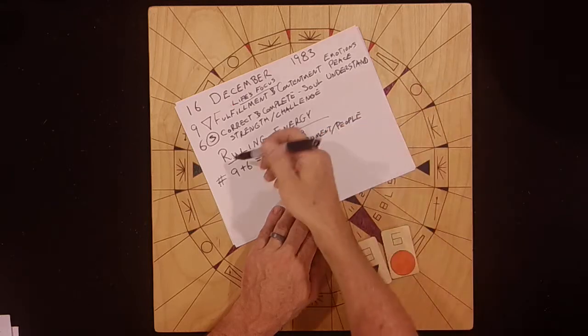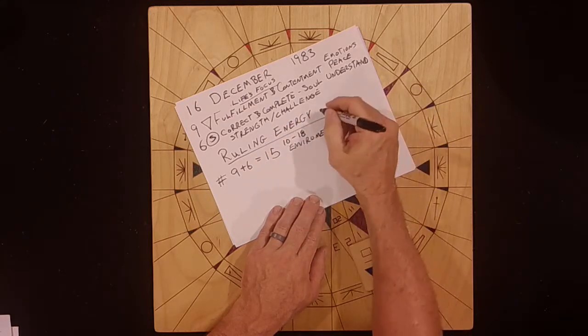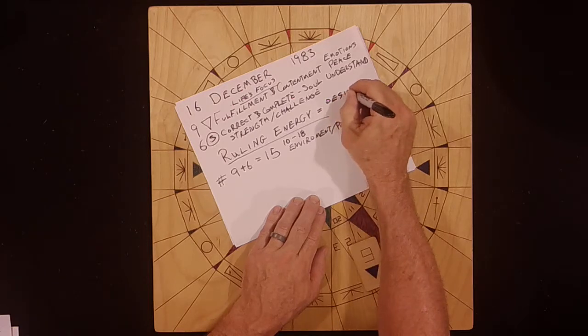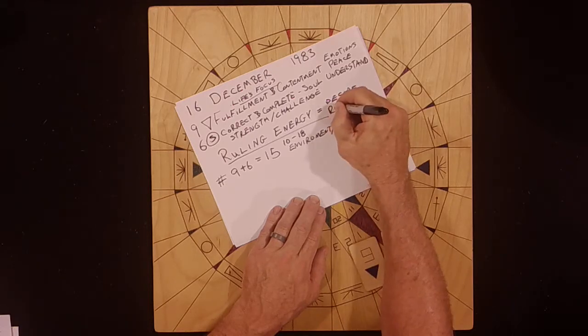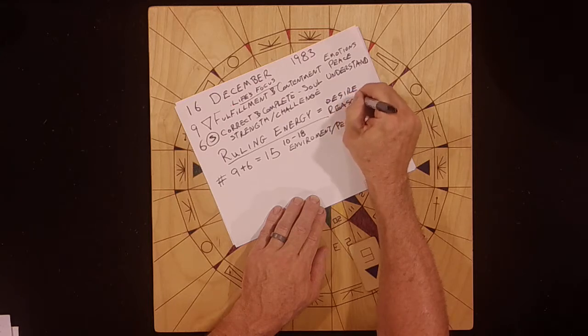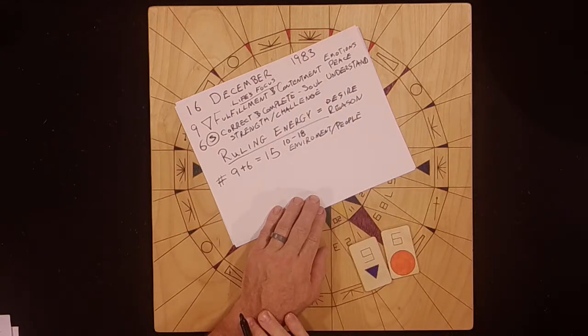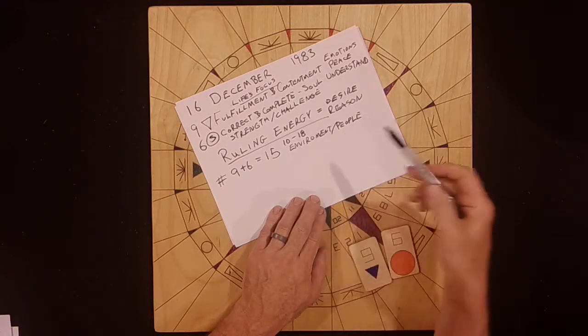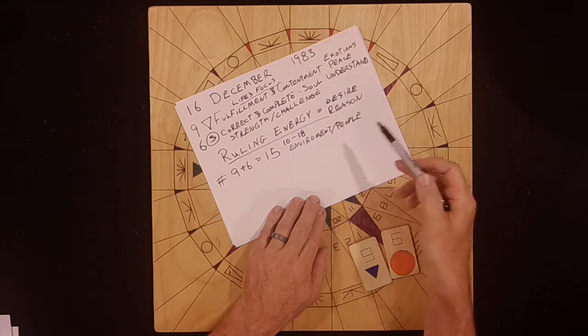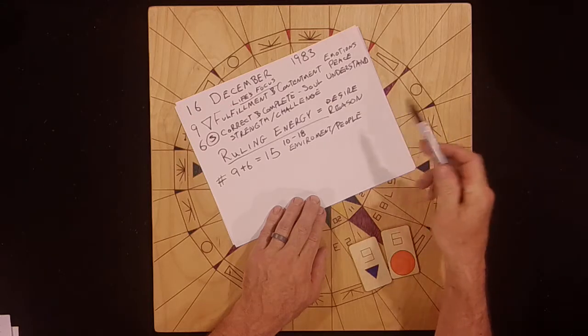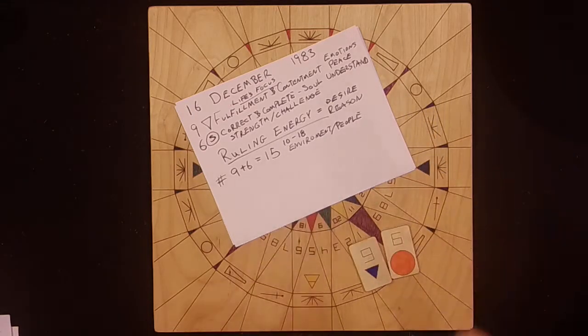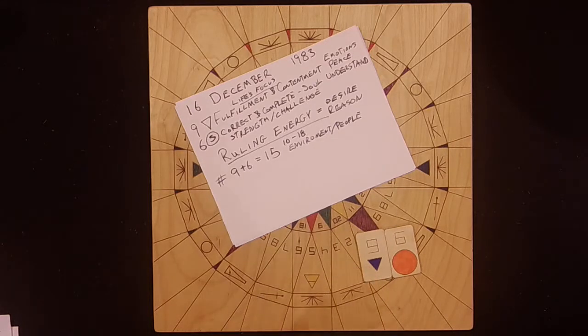The ruling energy is that they desire, because this equals desire and reason for doing this. It's about being correct and complete in the world, being correct and complete in the environment around them, with the people around them. That's what all of this has to do with.